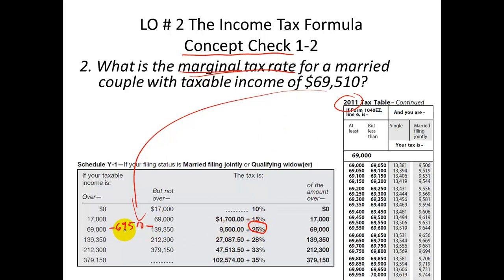Because if I earn $69,511, that extra dollar is going to be taxed at 25%, all the way up to about $70,000 more — that much more taxed at 25%, which is your marginal rate. Likewise, if I have a deduction, each dollar of deduction will save me $0.25. That's the marginal rate using the tax rate schedule — the second to the last page in our textbook.